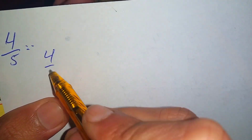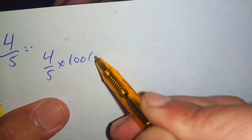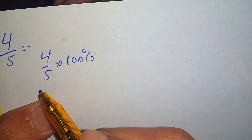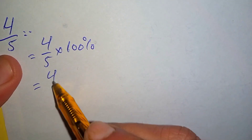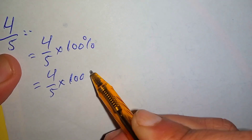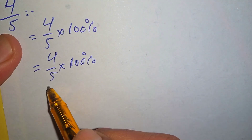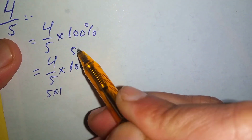In this video we are going to convert the proper fraction 4 over 5 to a percentage. So 4 over 5 multiplied by 100 percent.